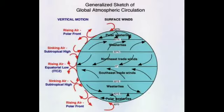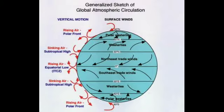For example, equatorial currents flow westward under the influence of the north-east and south-east trade winds. The North Atlantic Drift in the Atlantic and the North Pacific Current in the Pacific move in a north-east direction under the influence of the westerlies.